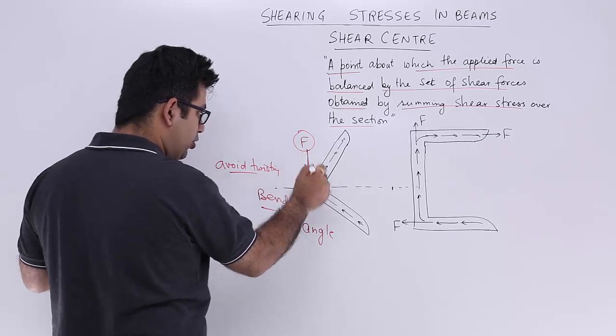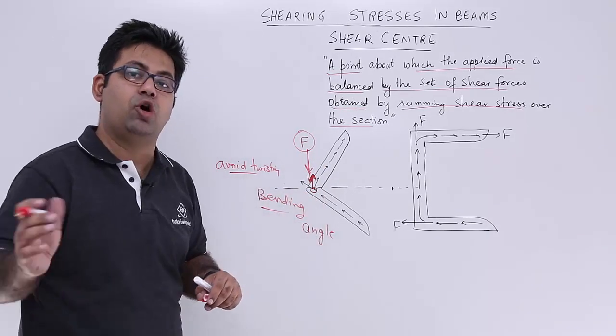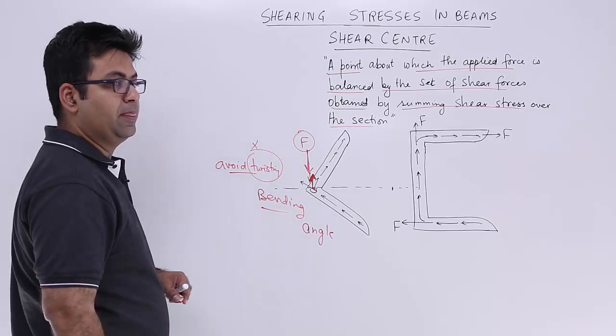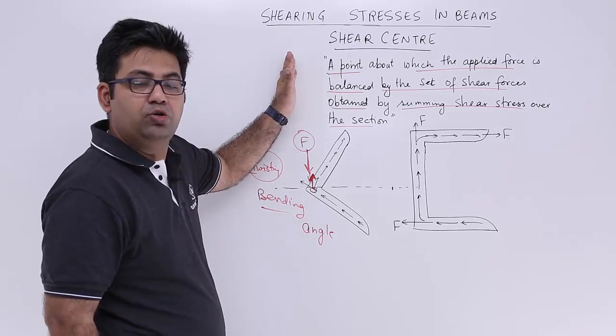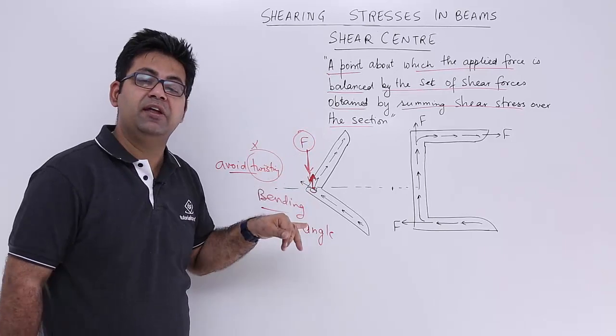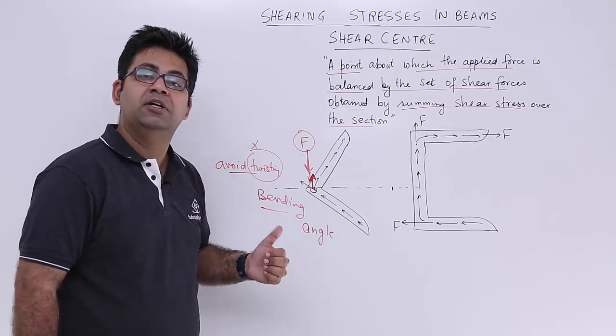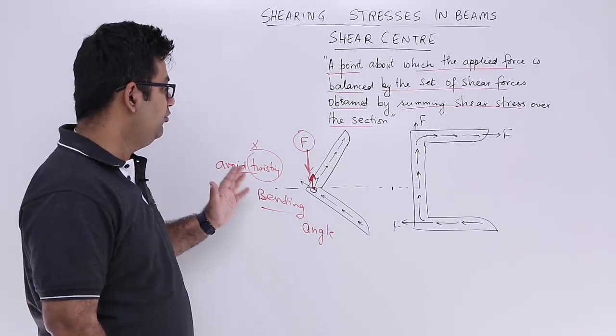This will stop the section from twisting. This is how you apply a shear load to avoid twisting. This point at which the shearing force is applied to avoid twisting with bending is called the shear center.